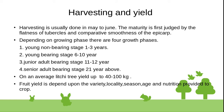The average tree yield is 40 to 100 kg per day in full bearing stage, which is less than 21 years above. Fruit yield depends upon variety, locality, season, age, and nutrition provided to the crop.